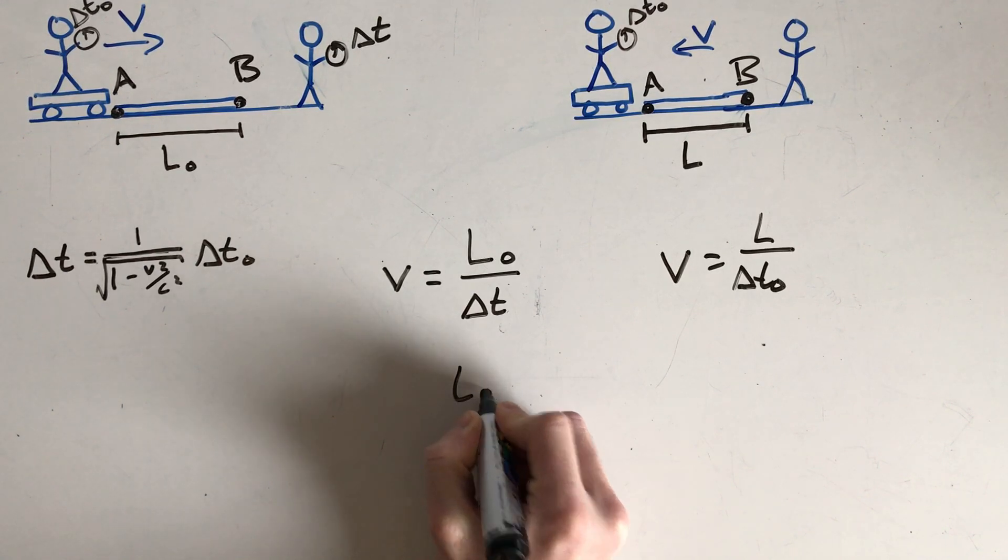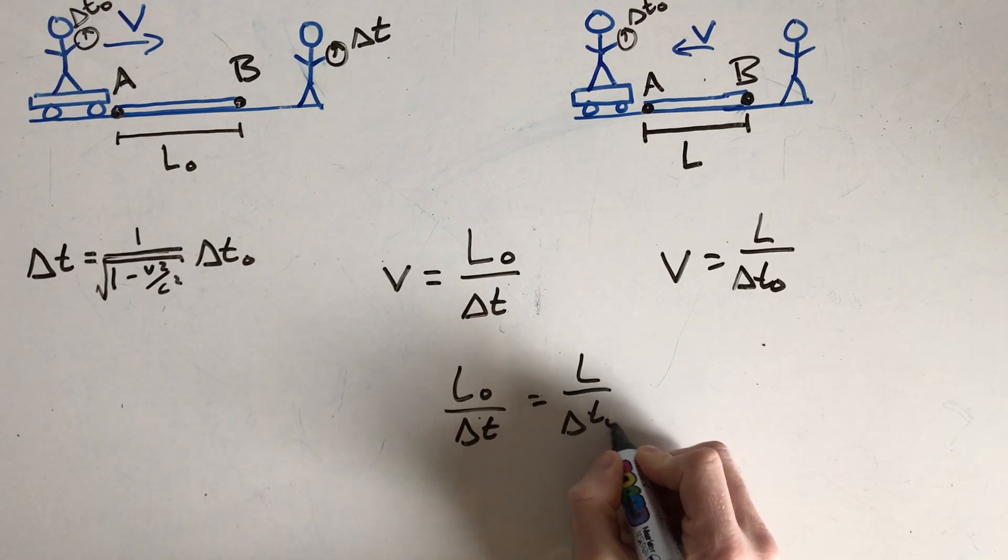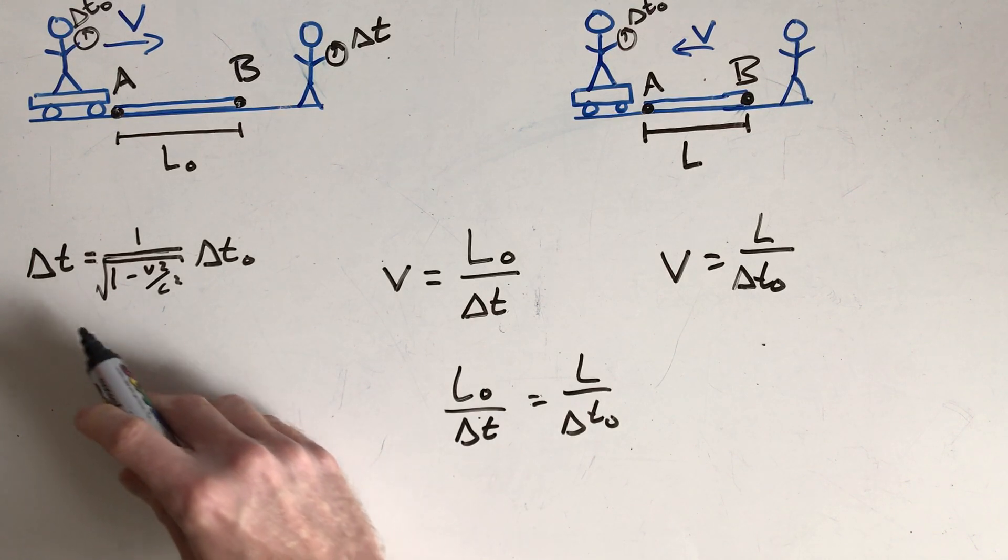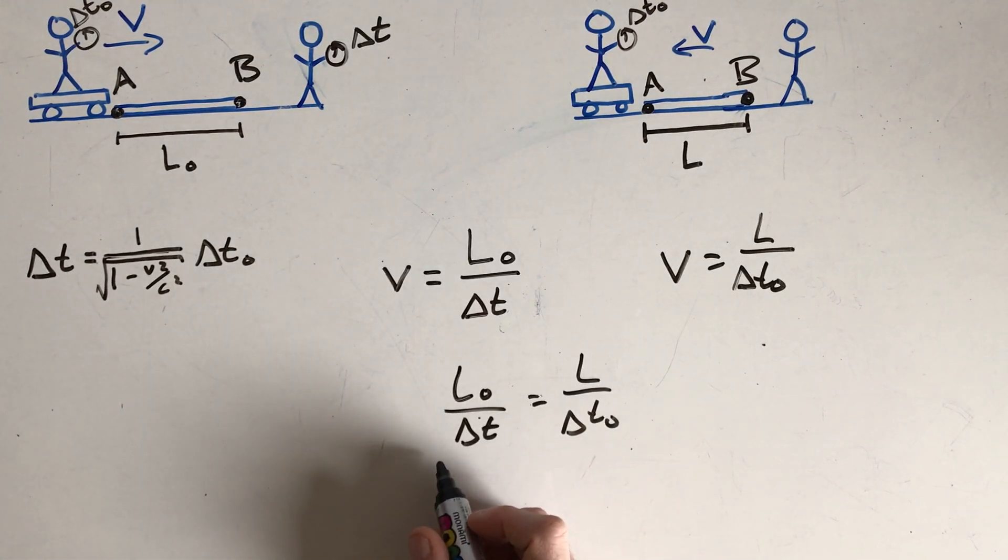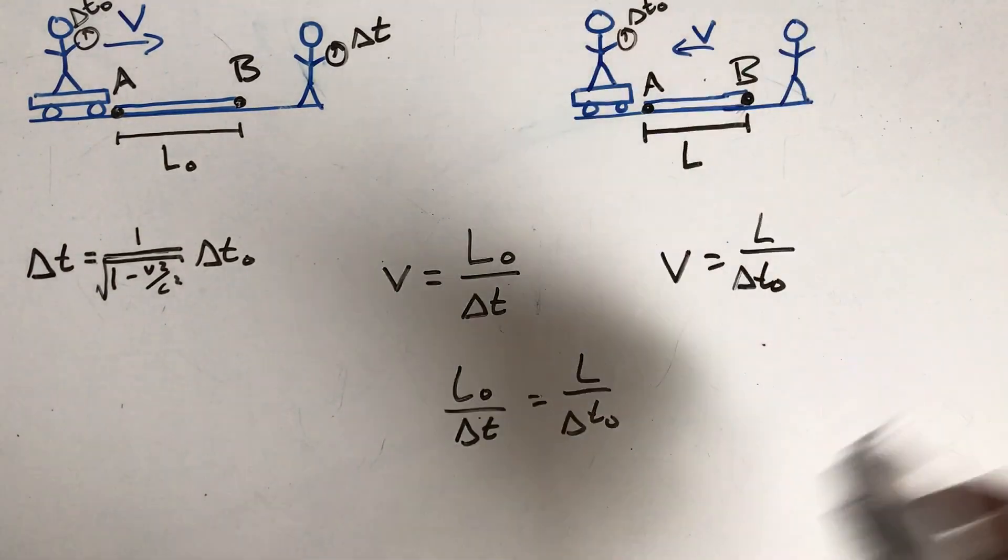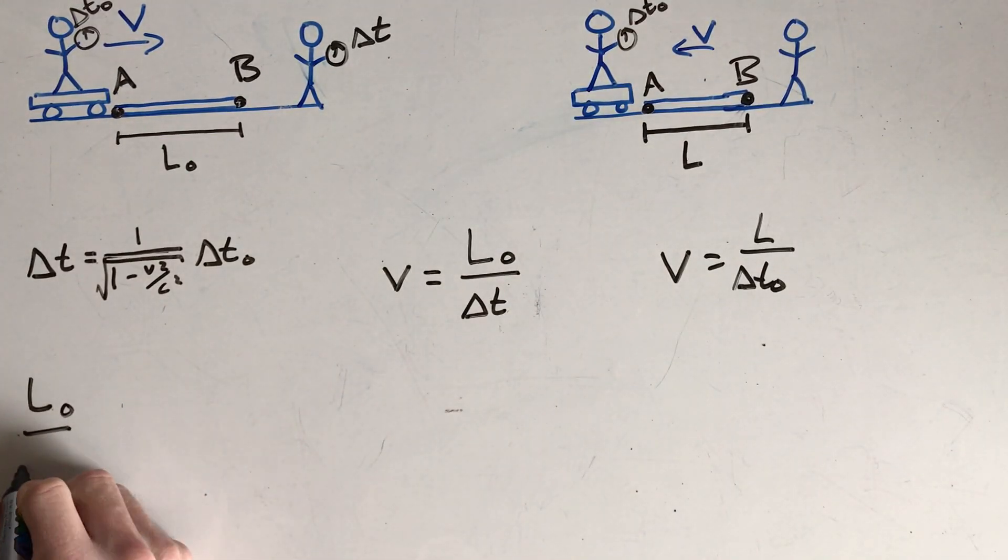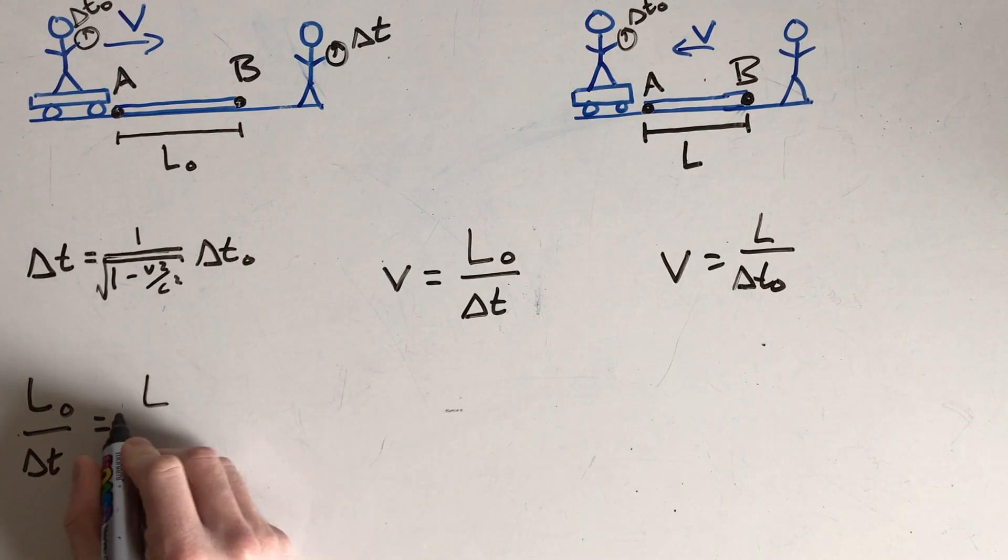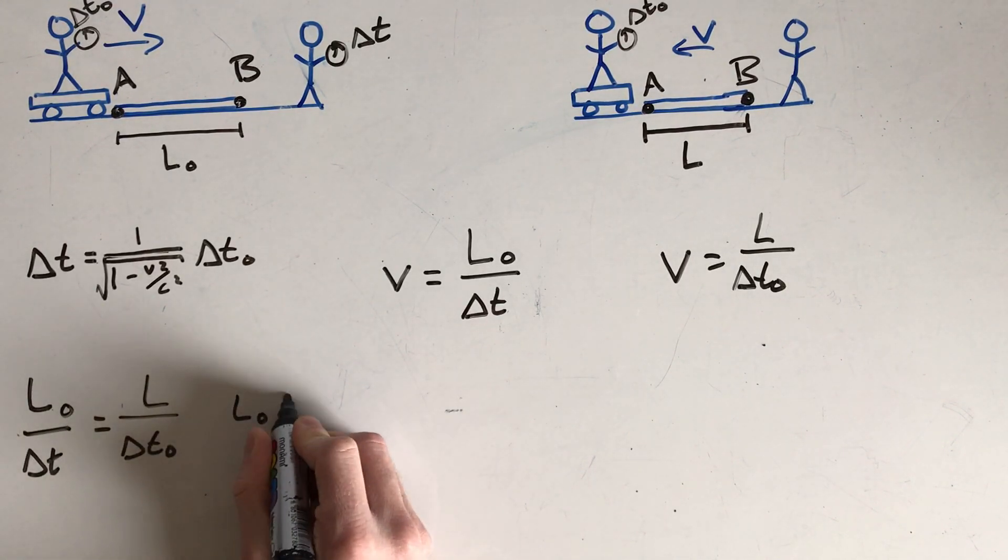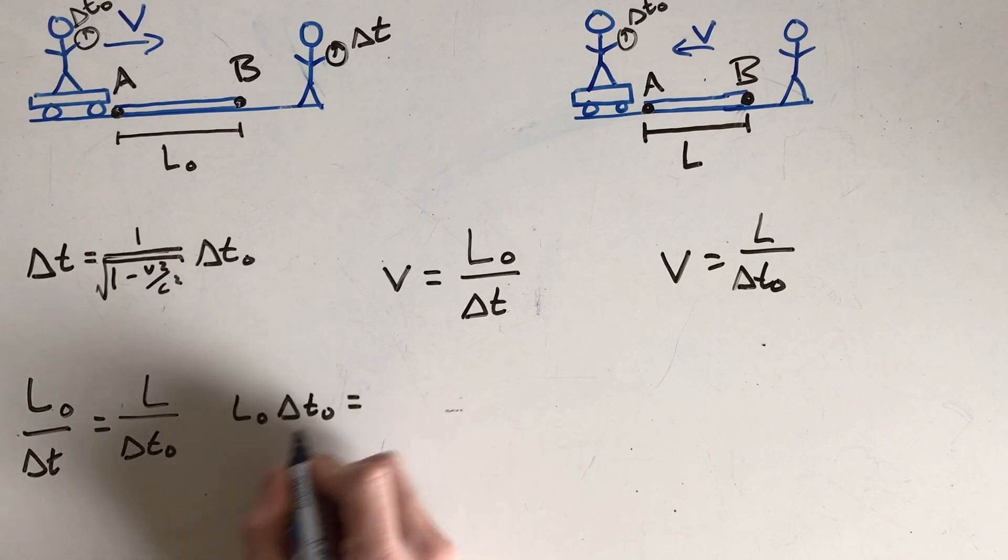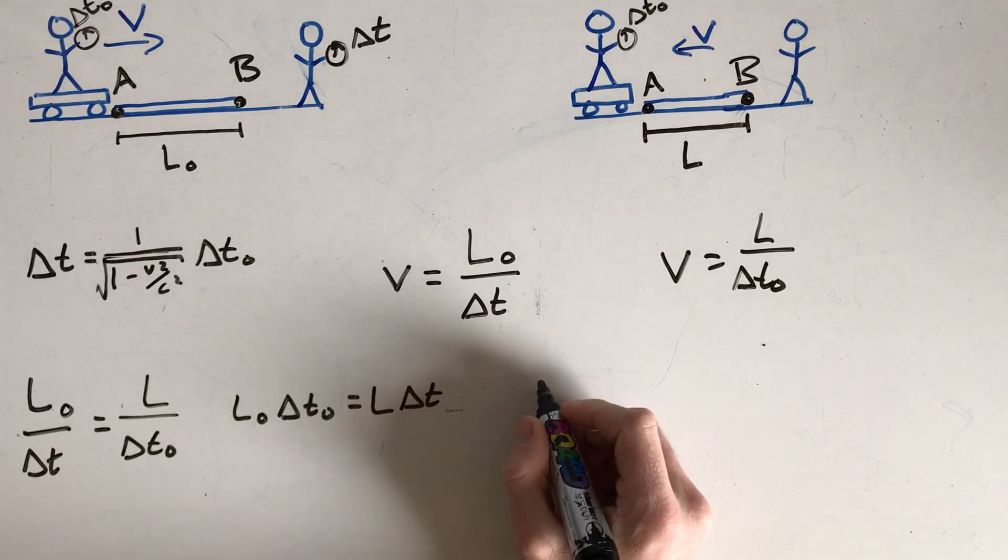So what this means is we can sort of combine these equations. But we already have this relationship between delta T and delta T naught. We know that delta T, and maybe I'll just go ahead and rearrange a little bit. I should make more room. I have not been conserving space. Well, let me come back over here. L naught over delta T is equal to L over delta T naught, which means that L naught delta T naught is equal to L delta T.